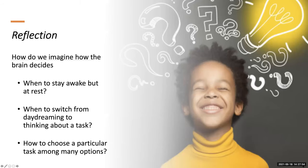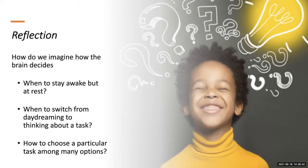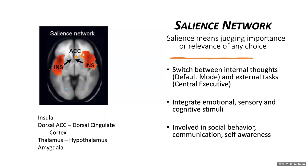Let's take a moment to reflect. How do we imagine that the brain decides when to stay at rest and when to switch from daydreaming to thinking about a task, and how to choose a particular task among many options? For example, if you're awake in the morning still resting and daydreaming, how could you choose among tasks like getting up and taking a shower, taking the dog out to walk, checking your email, getting your kids ready to go to school — versus just staying in bed and daydreaming? The brain has another network called the salience network.